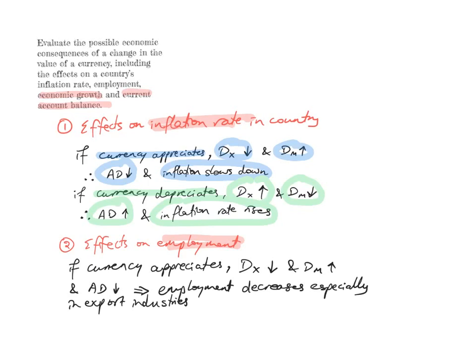Now let's look at the effects on employment. If the currency appreciates, demand for exports will fall and demand for imports will increase. Aggregate demand will therefore decrease, employment will decrease as a result, unemployment rises — especially in export industries.